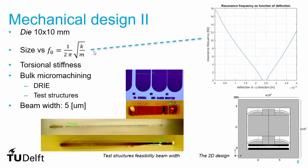Regarding the feasibility of the beam width, we performed feasibility testing to determine the smallest beam width that can be fabricated. We etched test structures using Bosch process deep reactive ion etching, with beam widths ranging from 1 micron to around 100 microns. We found that the smallest obtainable beam width is around 5 micrometers.